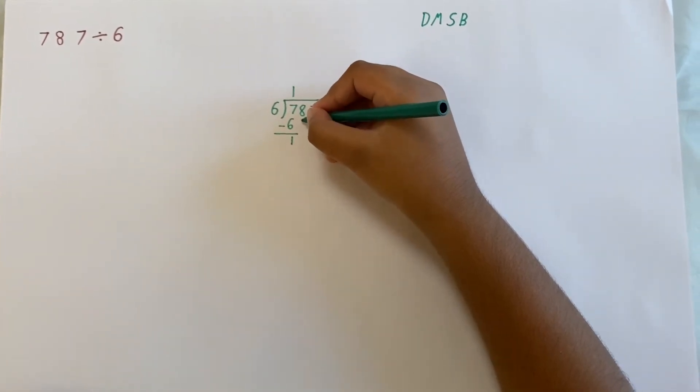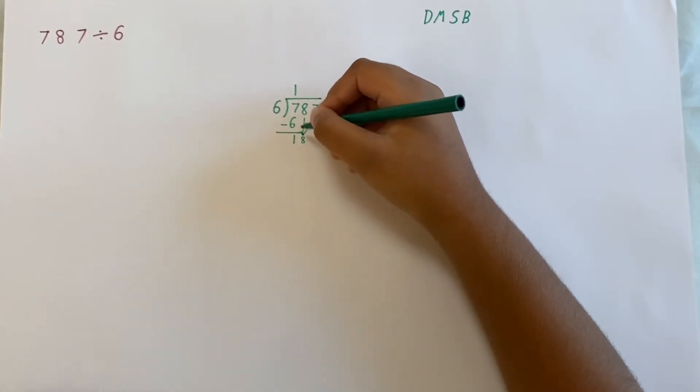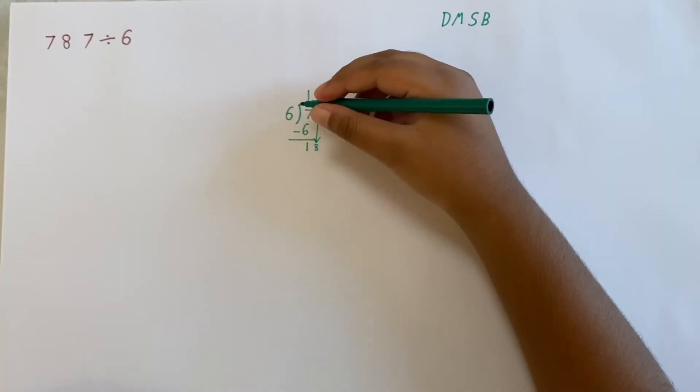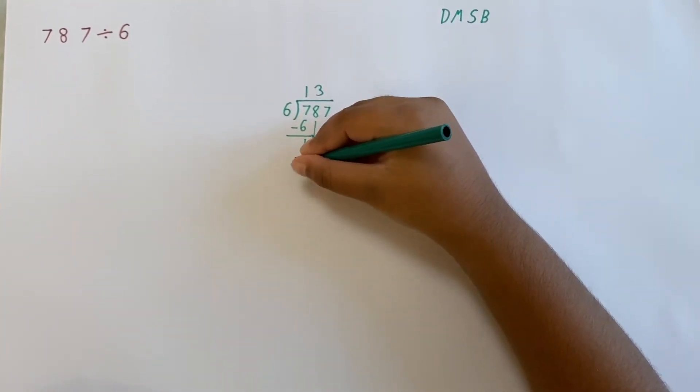Now we bring down the 8 to make the remainder at 18. 6 times 3 is 18. 18 subtract 18 is 0.